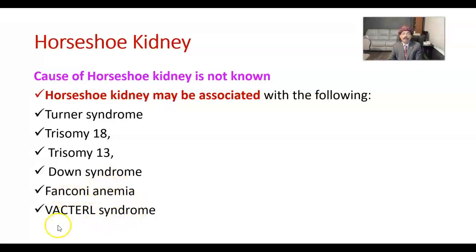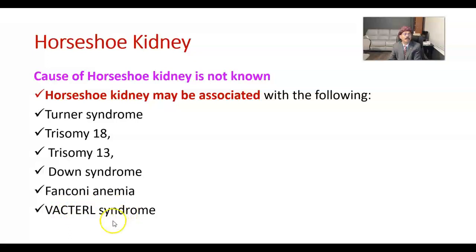It may also be associated with Fanconi anemia and VACTERL association — which includes Vertebral anomaly, Anal canal anomaly, Colorectal anomaly, Tracheoesophageal anomaly, Renal anomaly, and Limb anomaly. These are all developmental anomalies that may come together, and horseshoe kidney may sometimes be associated with them, though not always.